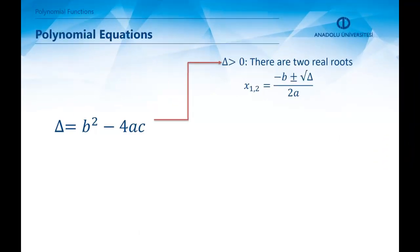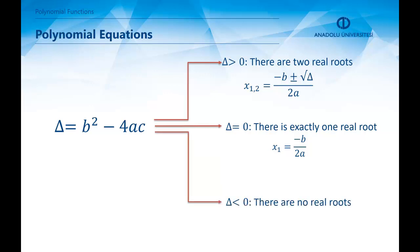If delta is greater than 0, we say that the quadratic equation has two real roots. A root is a number that makes the function 0. If you insert this number into the function, you must get 0. So if the discriminant of a quadratic equation is greater than 0, we have two real roots. And these roots are given by this equation, which is (-b ± √Δ) / 2a. If the discriminant is 0, there is exactly one real root, and it is -b / 2a. And if the discriminant is less than 0, there are no real roots, which means that the graph of this quadratic function cannot intersect the x-axis.